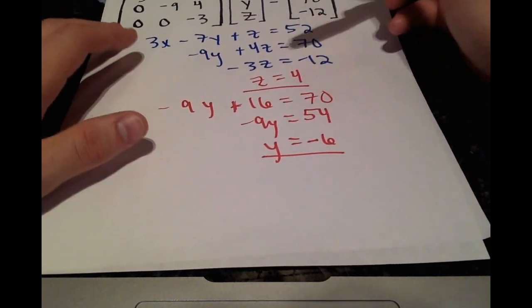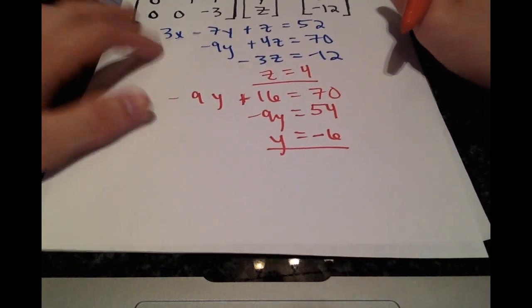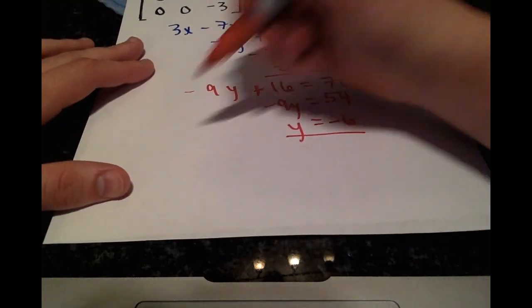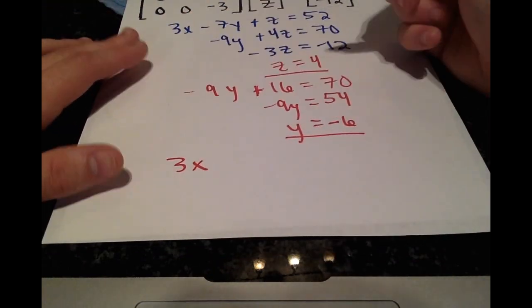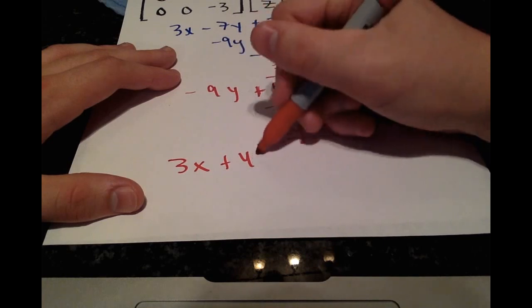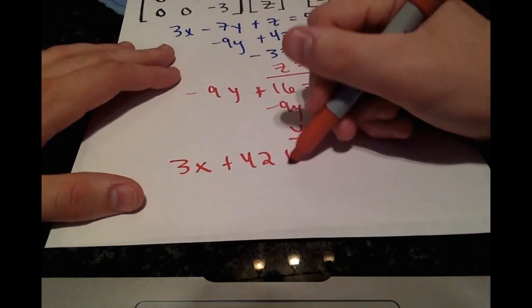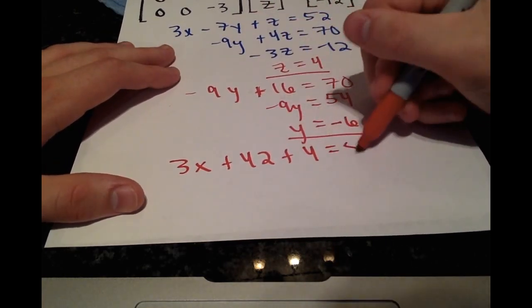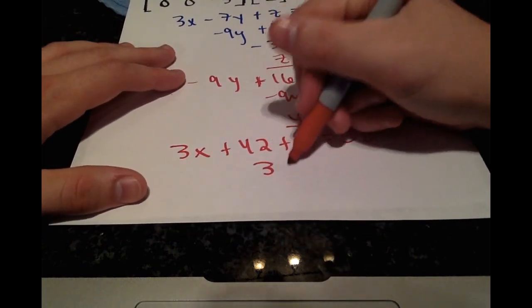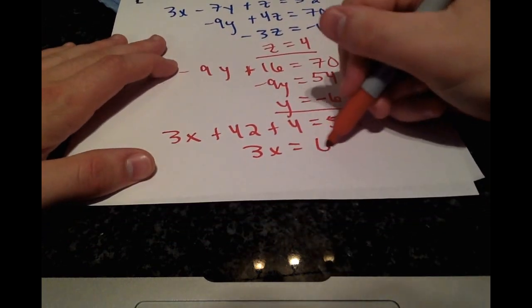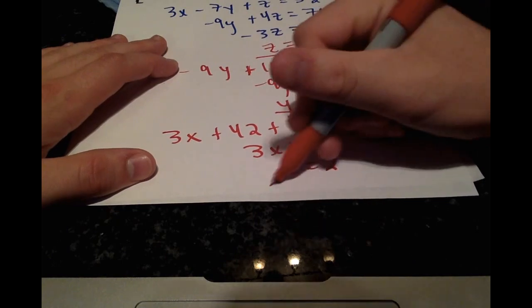And then plugging in y and z to our equation above, we have 3x plus 42 plus 4 is equal to 52. So that's the same as 3x is equal to 6. So x must be equal to 2.